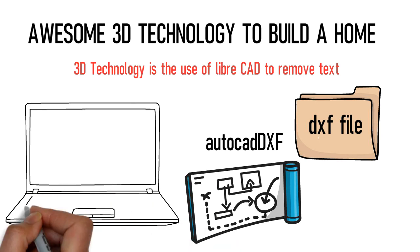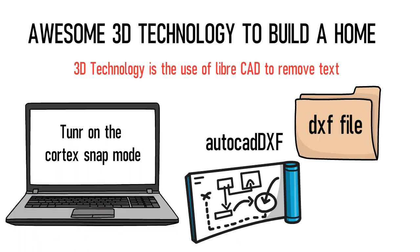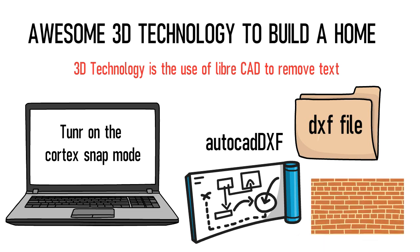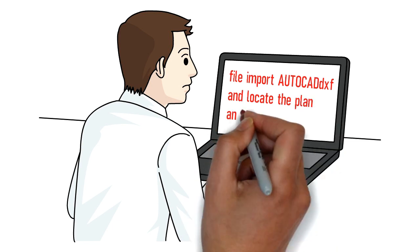This add-on in Blender has to be enabled in preferences and also turn on the vertex snap mode so that the wall can be drawn quickly and accurately. It starts by going to File, Import AutoCAD DXF and locate the plan and click import.